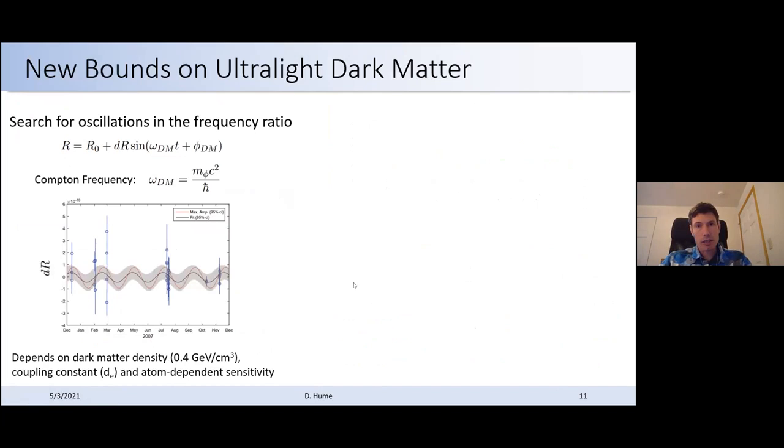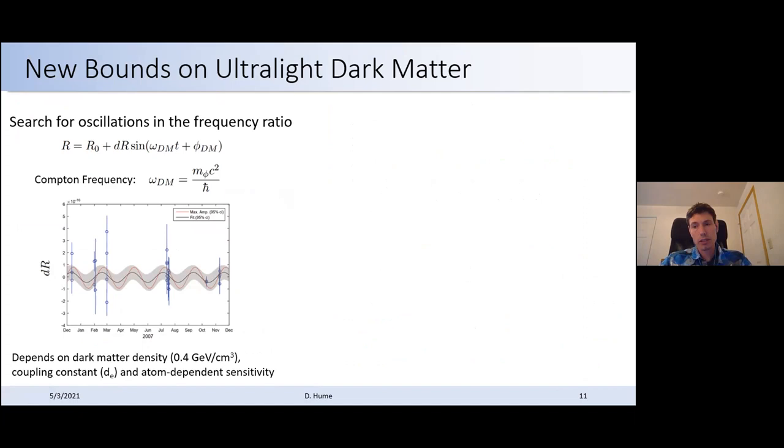So that's something that was just published this year. And it's a really nice thing that we can use that exact same data to look for possible signatures of ultralight dark matter. So this is something I don't need to spend too much time on because Mariana has already discussed this, but the basic idea is that we take that data over time and we search for oscillations in the frequency ratio that would show up at the Compton frequency corresponding to the mass of the dark matter particle. And for the clock measurements, those frequencies tend to be in the 10 to the minus 22 eV up to 10 to the minus 17 or so eV. The amplitude of that signal depends on the dark matter density, which is known in the cold dark matter model, the coupling constant that it has, which would appear as an apparent oscillation in the fine structure constant in this case. And there's an atom dependent sensitivity that comes in there.